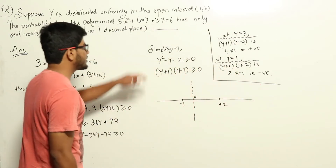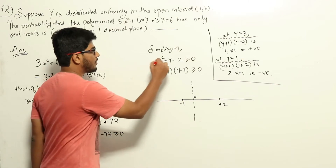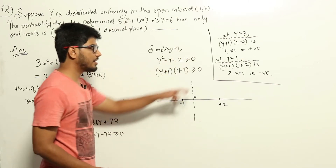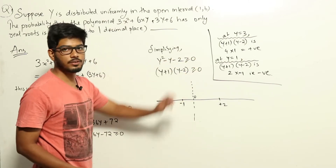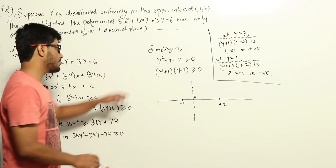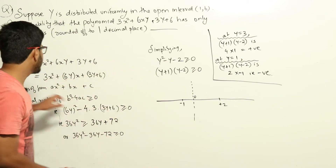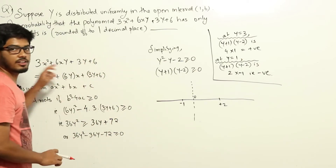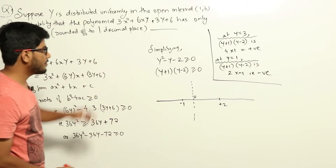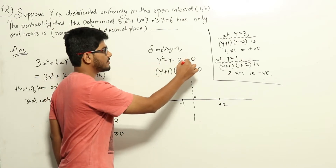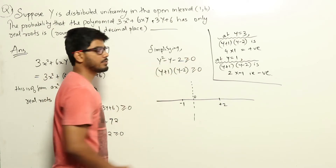Simplifying that equation, we divide through to get y² − y − 2 ≥ 0. So the polynomial will have real roots if y² − y − 2 is greater than or equal to 0.